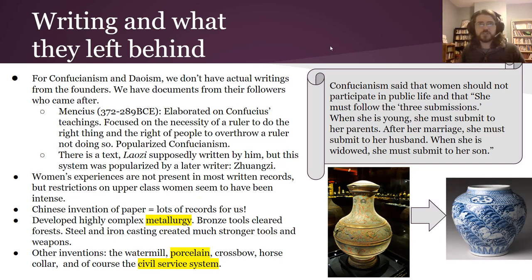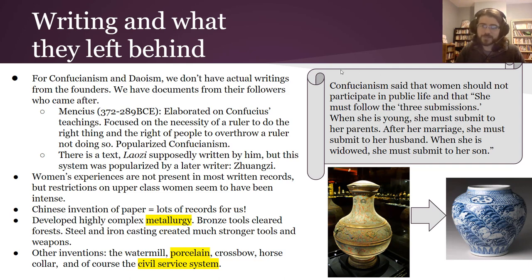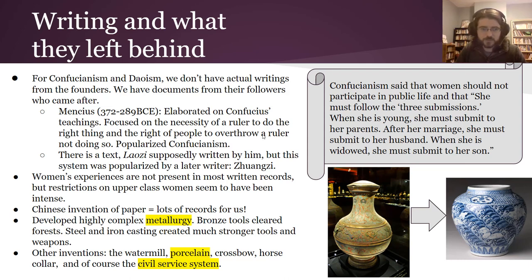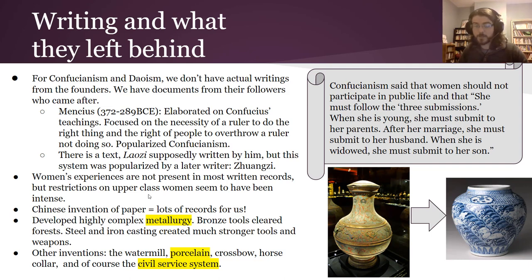Here's what we have from this time period in terms of writing and inventions. For Confucianism and Daoism, we don't have writings from their original founders — we have writings from their followers. Similar to issues in India, you have to be careful about how ideas are interpreted over time. For example, Mencius, the follower of Confucius, wrote that women should not participate in public life and must follow the three submissions: when young she must submit to her parents, after marriage to her husband, and when widowed to her son. Because of this belief system, we don't have a lot of women's experiences in written records. Lower-class women probably had fewer restrictions but also weren't writing, since it took a great deal to learn the Chinese writing system. They invented paper though, so we have lots of records — but mostly from men.